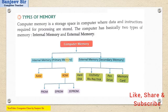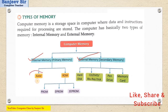Memory — in a computer, we know that a computer has storage space where we store data and information. There are two types of computer memory: first is internal and second is external. Internal memory is of two types — first is RAM and second is ROM. Internal memory is primary memory, the most important memory in a computer.